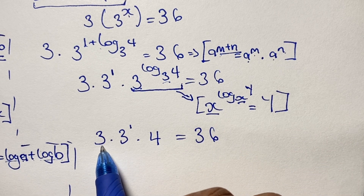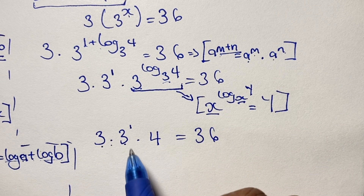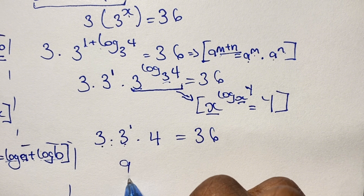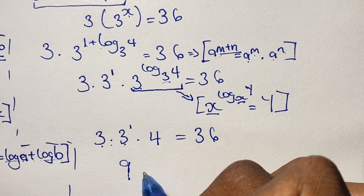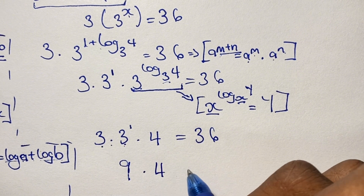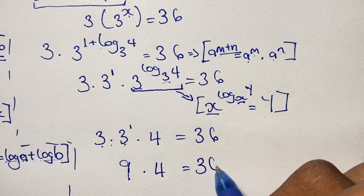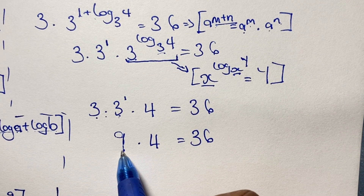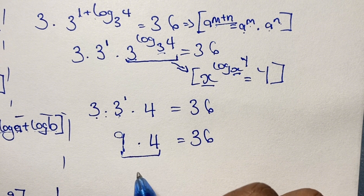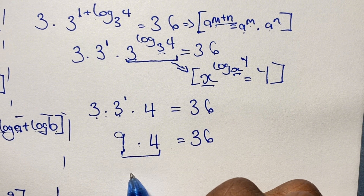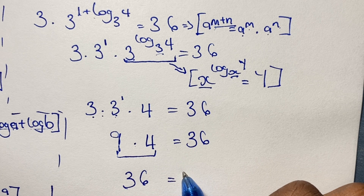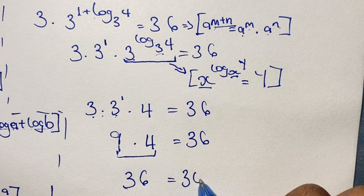So we say 3 times 3 to the power of 1. We know that 3 to the power of 1 is just 3. So 3 times 3 gives us 9. And then 9 times 4 is equal to 36. And there we have it — 9 times 4 is indeed equal to 36. Therefore our solution for x is indeed correct: x equals 1 plus log base 3 of 4.